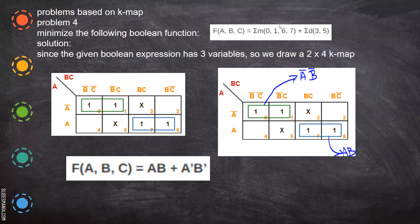Substitute one in these places and X in these places. Now you try to form maximum pairs, quads, etc. When you see here, this cannot be combined. Because when you combine this it will give three ones — three variables are combined. That is not allowed. Either two ones or four ones, etc. In between, if any one comes, then you can form — that X will be included and you can form a quad. But here it is not that, so you have to form only a pair.